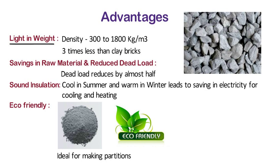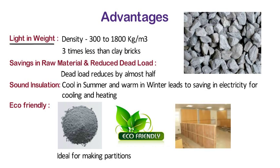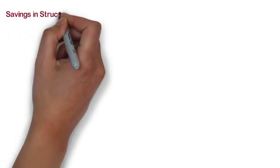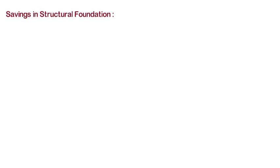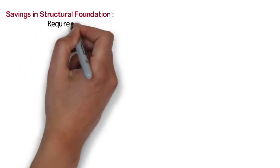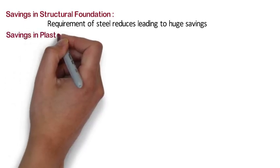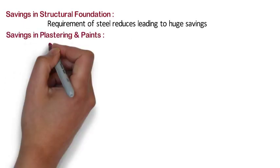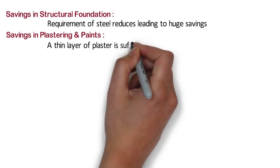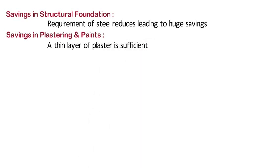The use of CLC for partitions will reduce the need for plywood partitions, which will result in reduction in deforestation and will benefit the environment. Savings in structural foundation: CLC blocks are very lightweight, hence the resultant load transferred to foundation reduces and the requirement of steel also reduces, leading to huge savings. Savings in plastering: a thin layer of plaster is sufficient on CLC blocks, hence considerable savings can be made.